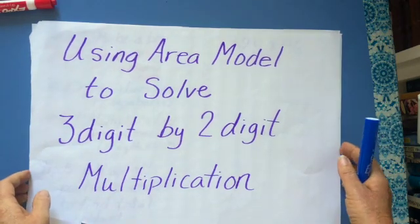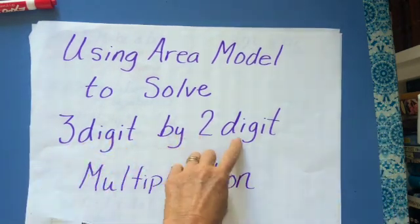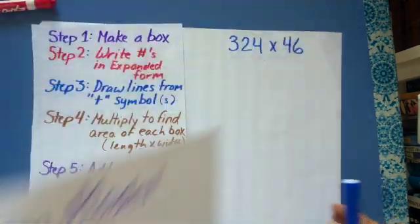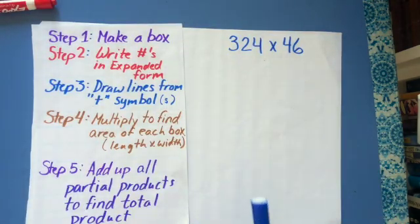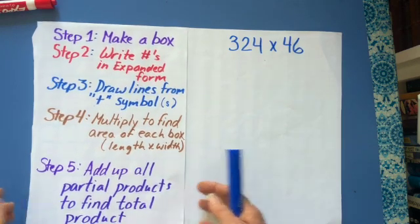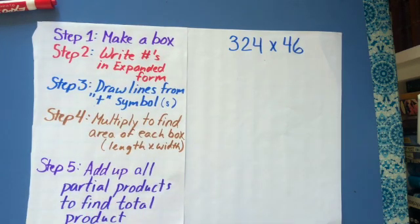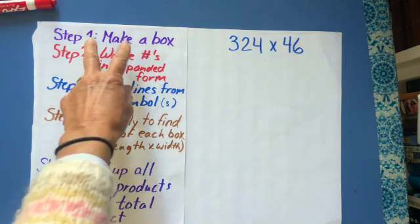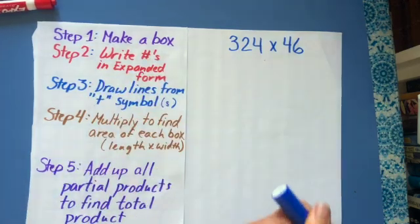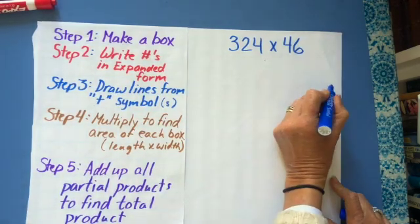This video is on using area model to solve three-digit by two-digit multiplication problems. These are the same steps as I used for two by one, three by one, and two by two multiplication problems. So the first step is to make a box. So I'm going to make a box.